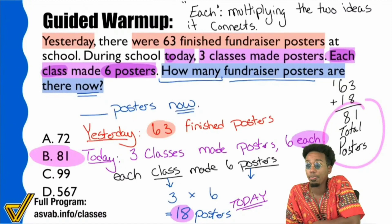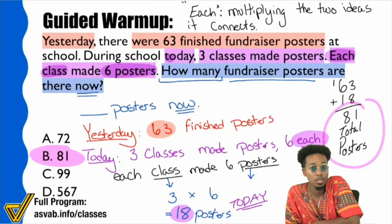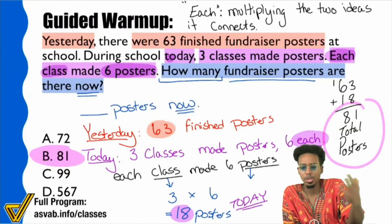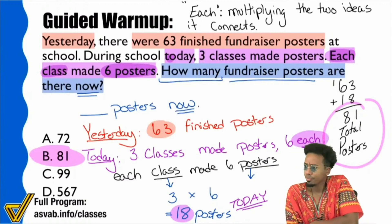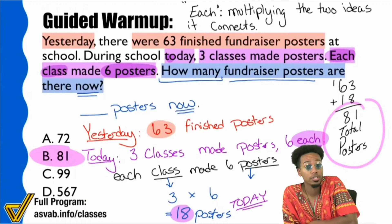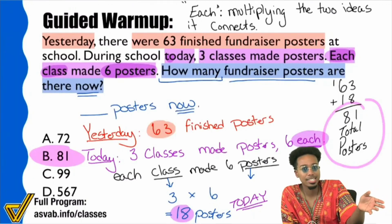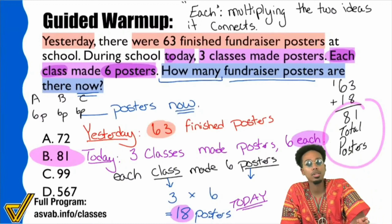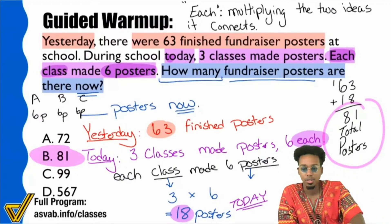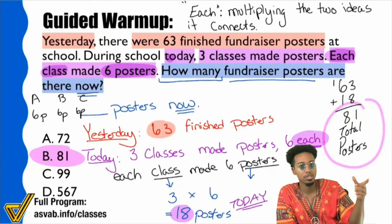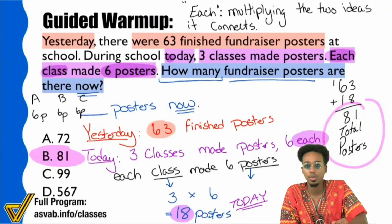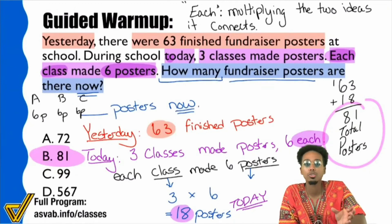For example, if I earn $45 each hour and I work five hours, multiply them and you get the total money. Or: each class made six posters — that means every class counts as six. Class A made six, class B made six, class C made six. Add them up: six plus six plus six equals 18. Six, 12, 18. So again, the word 'each' is a shorthand way of saying multiply, and the two ideas it connects are what you're multiplying.